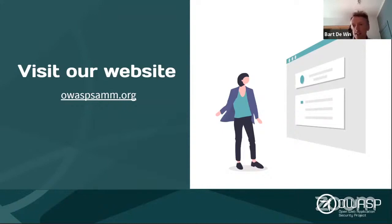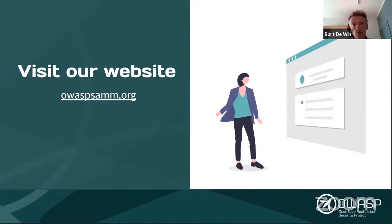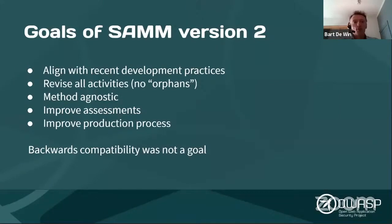We have quite a few people spending a lot of time making the website very accessible. One important thing is the URL, because we still see some confusion — the correct URL of our main website is owaspsamm.org. If you want to stay updated on all the news and updates, please make sure to visit this website from time to time and follow our channels, which Seba will come back to later in this talk.